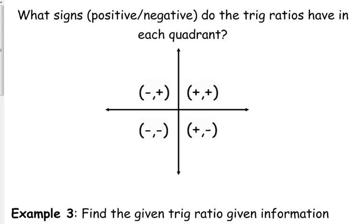Let's think about this. Right now I have a coordinate plane here, with quadrants labeled with just the signs of the x's and y's in those quadrants. In the first quadrant, x is positive, y is positive. Second quadrant, x is negative, y is positive. Third quadrant, x is negative, y is negative. Fourth quadrant, x is positive, y is negative. So let's apply this to our trig ratios.